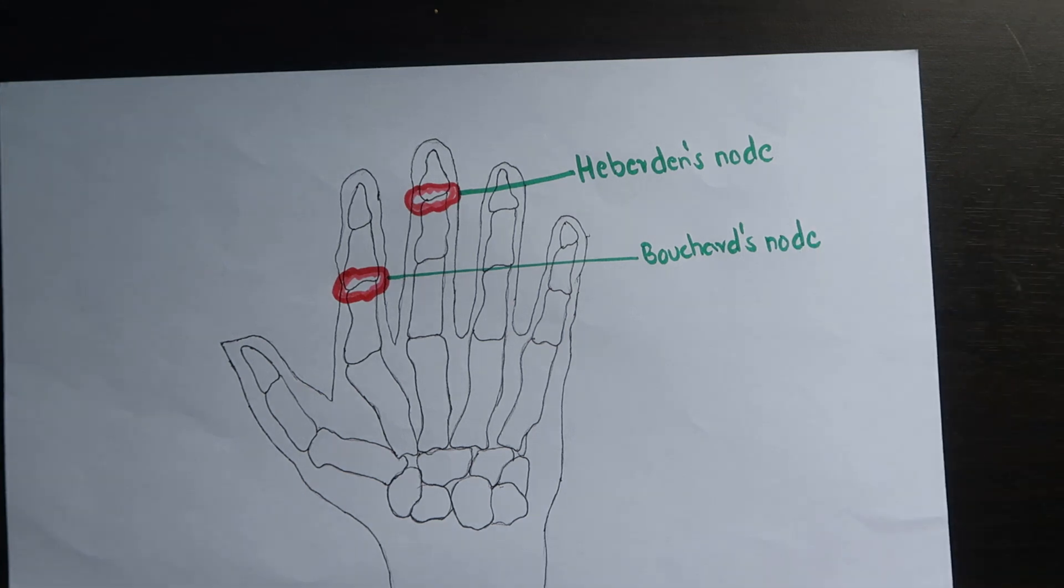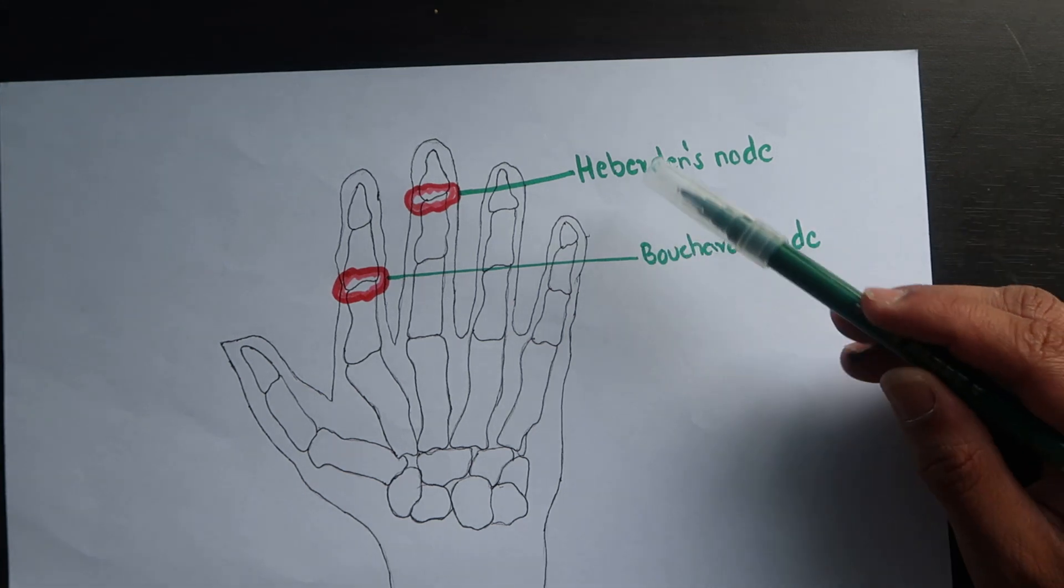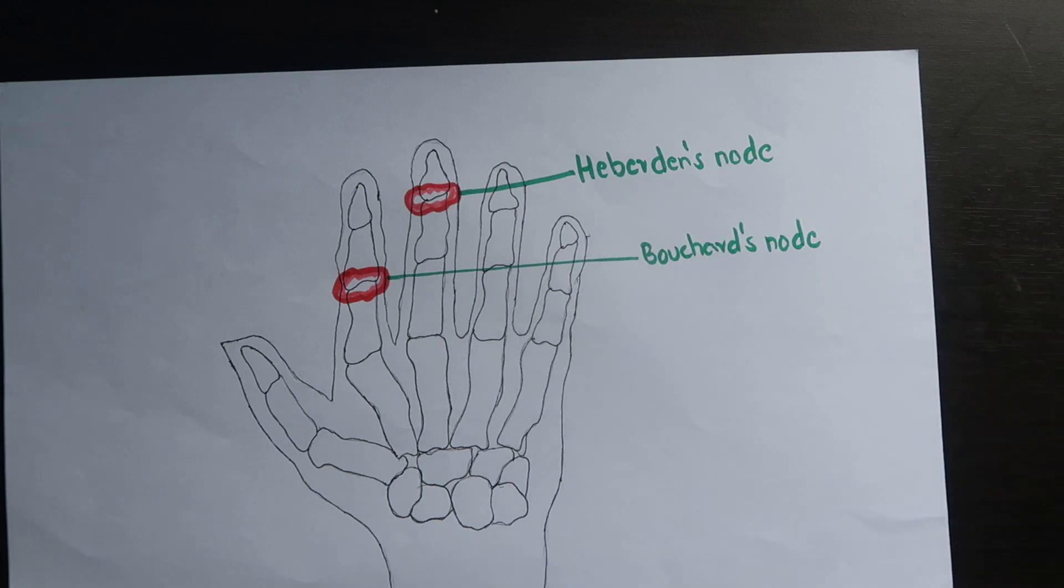And to not get confused with these names, remember B comes before H. So when you go from up to below, the proximal interphalangeal joint comes first. So Bouchard's nodes come first and Heberden's node in the distal interphalangeal joint.